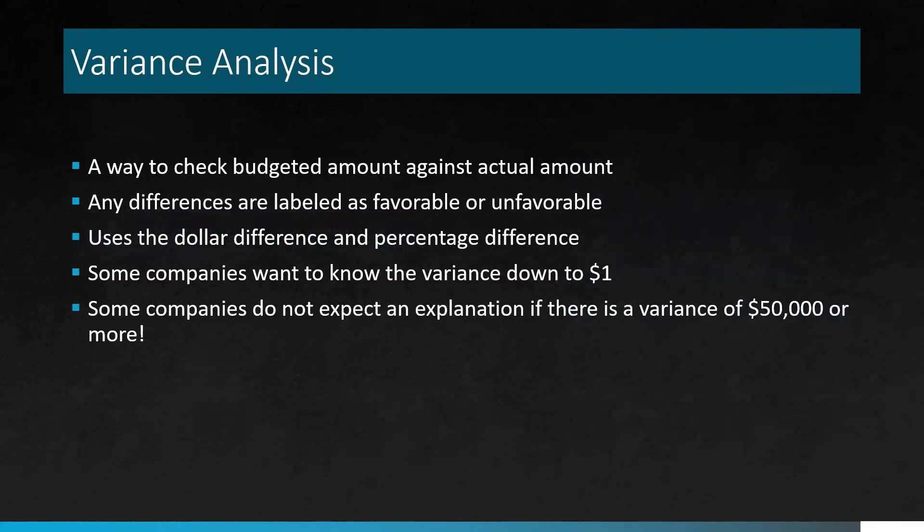Some companies that you may work for — if it's a small company — will probably want to know more about the variance down to a dollar difference. So if I budgeted $10 for supplies and came in at $9, they may want to know why there's a $1 difference. In larger companies, some set a threshold where they require an explanation of a variance. For example, if there's a variance of $50,000 or more, sometimes the company doesn't even require an explanation.